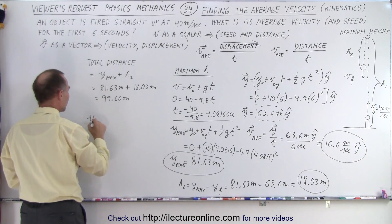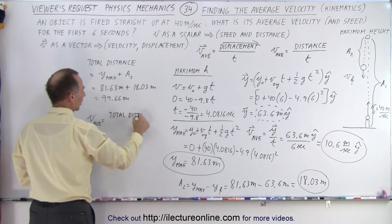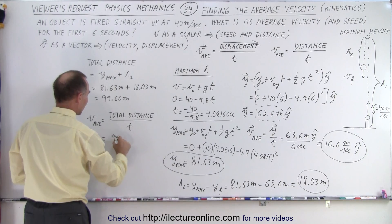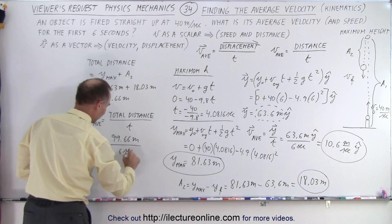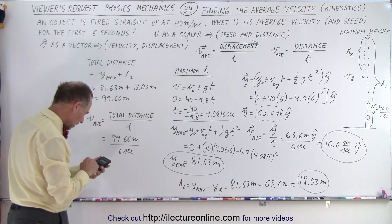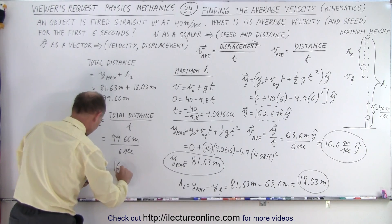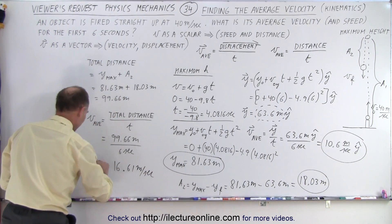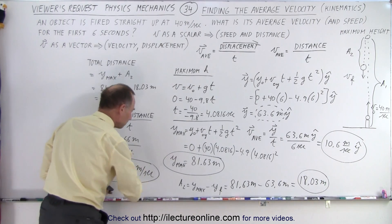And now the average speed in a scalar quantity is total distance divided by the total time. So in this case, 99.66 meters divided by 6 seconds. So now we have 99.66 divided by 6, which gives us 16.61 meters per second. And that's the average speed, not a vector quantity.